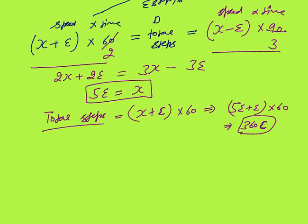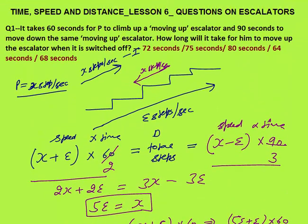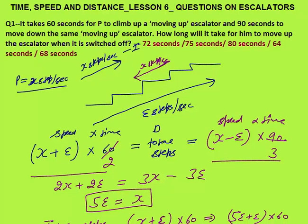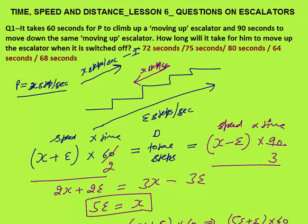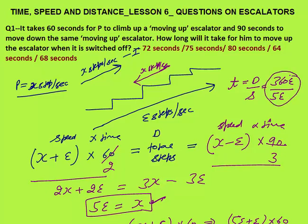When the escalator is switched off, escalator speed is zero. Time equals distance over speed. Distance is 360e steps, and P's speed is x, which equals 5e steps per second. So time equals 360e divided by 5e, which gives 72 seconds. It will take P 72 seconds to move up the escalator when it is switched off. The answer is 72, option number 1.